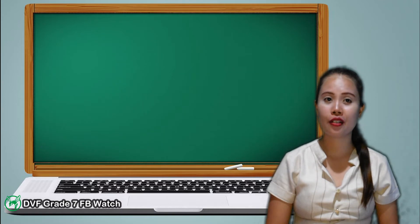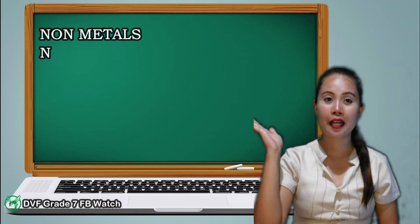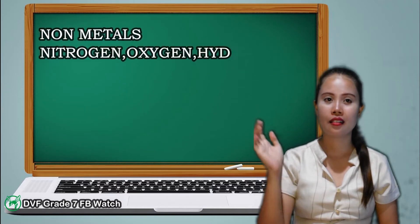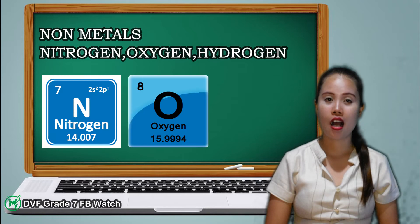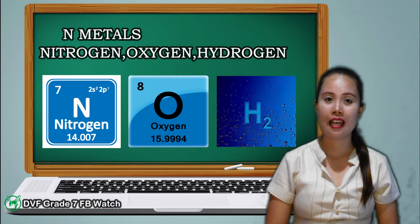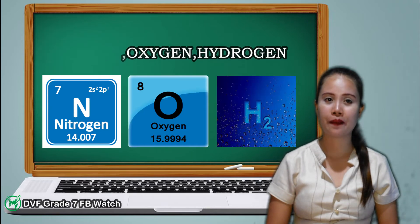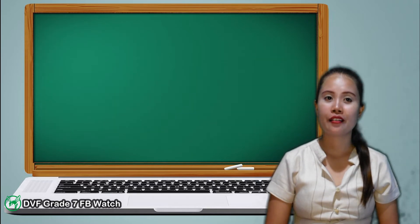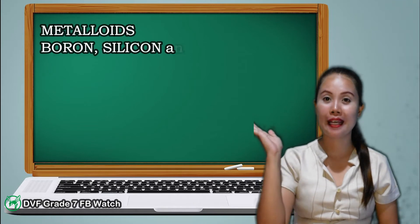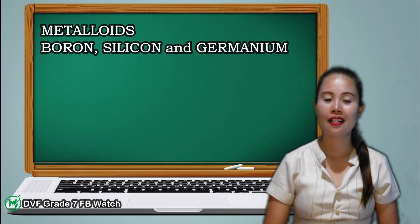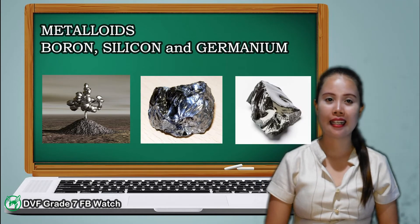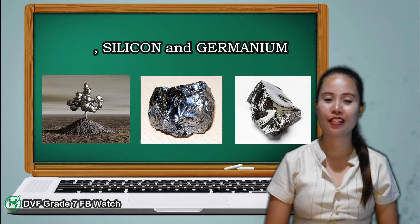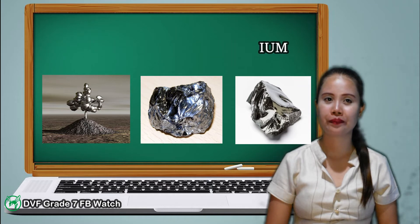Others are non-metals, like nitrogen, oxygen, and hydrogen. There are also elements that are metalloids, like boron, silicon, and germanium.